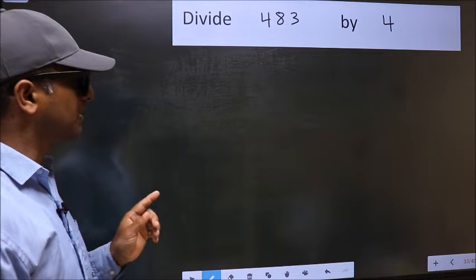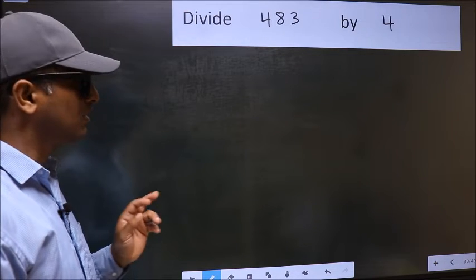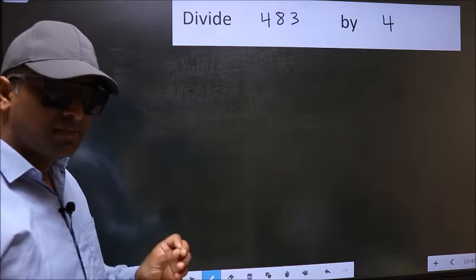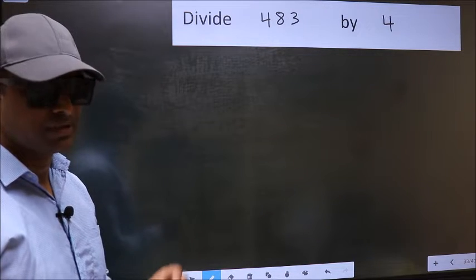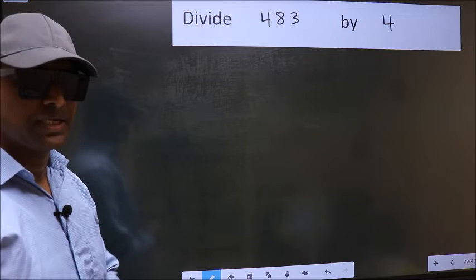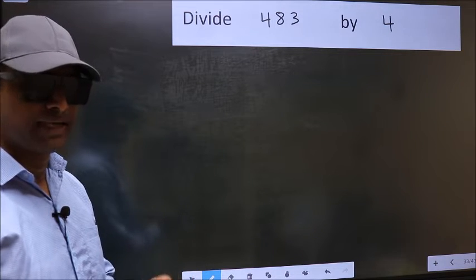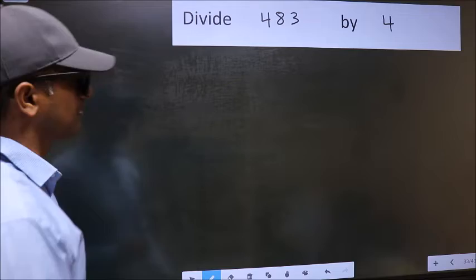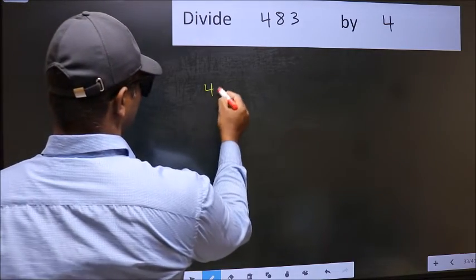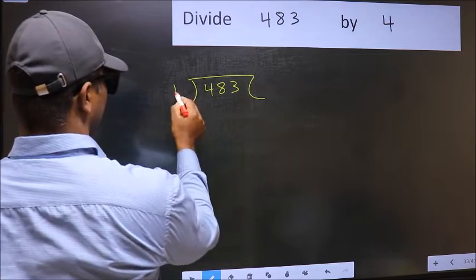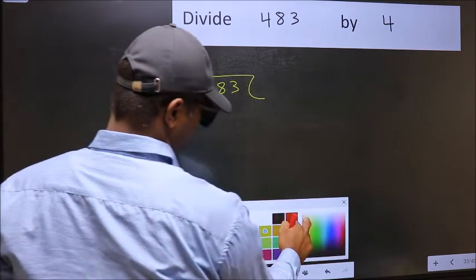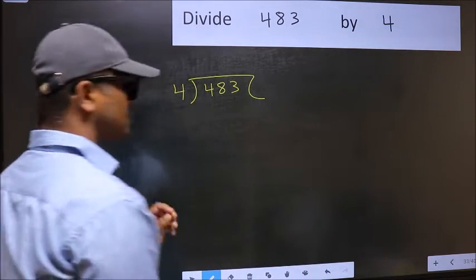Divide 483 by 4. While doing this division, many do a mistake. What is the mistake that they do? I will let you know, but before that we should frame it in this way: 4 into 483. Here, this is your step 1.